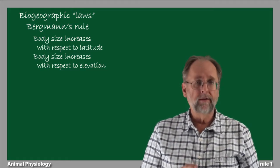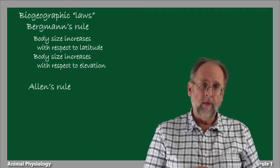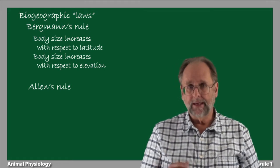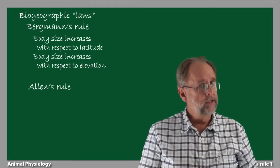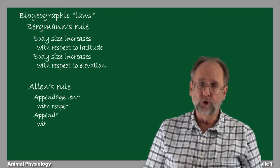Another of these biogeographic rules is Allen's Rule, which says that the relative lengths of appendages, that is, the limbs and ears, decreases with respect to latitude and elevation.